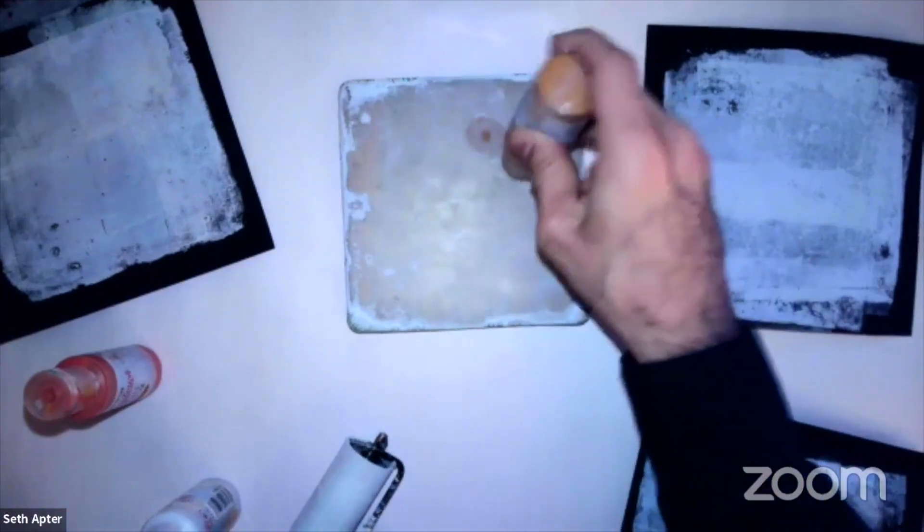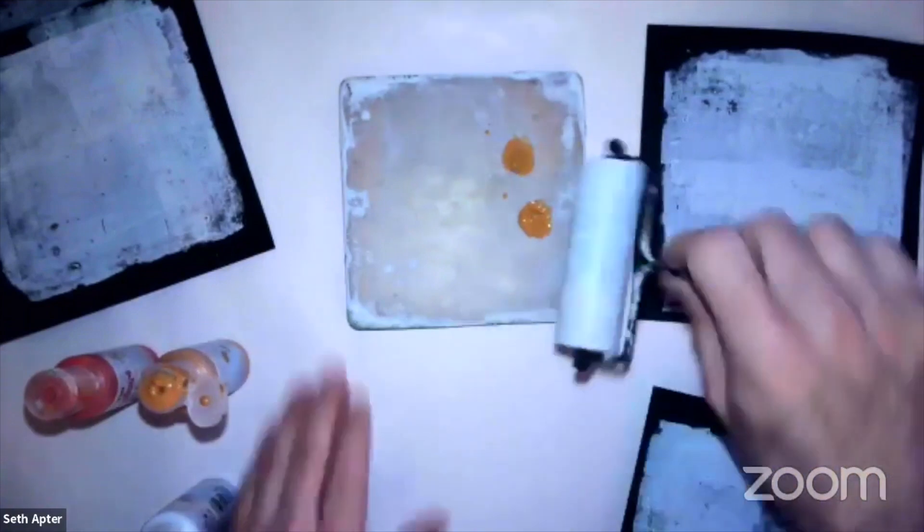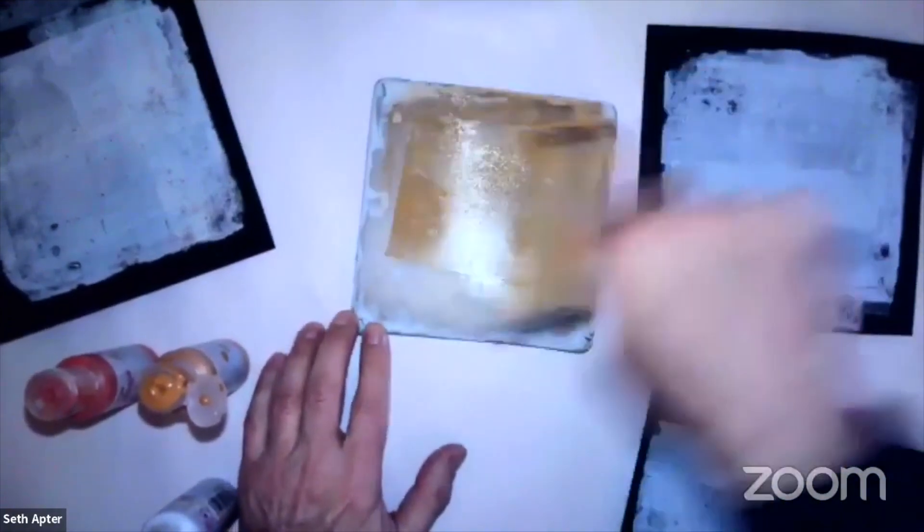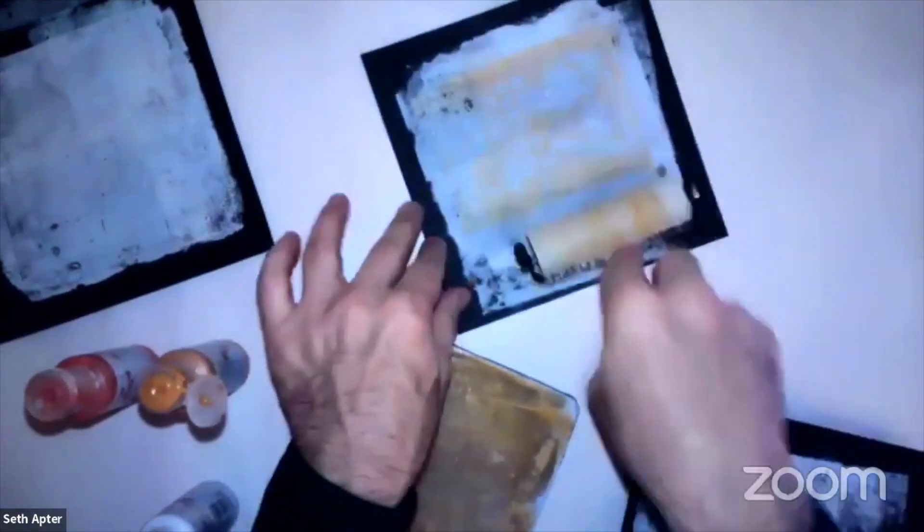All right, so let's put a little bit of the Terracotta. Terracotta is kind of like a rich ochre. So it's automatically going to add some vibrance and it will shift the coloration as well.